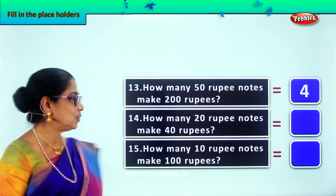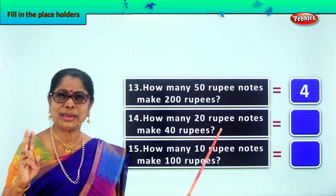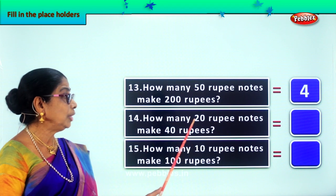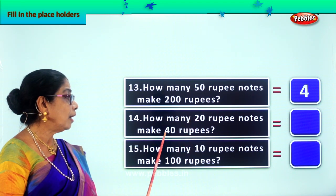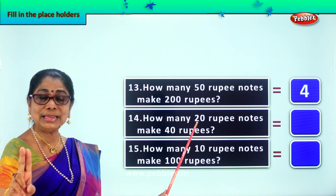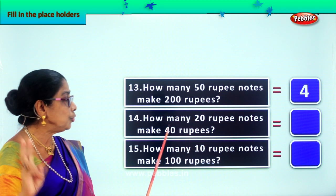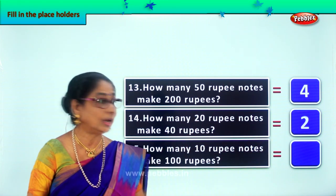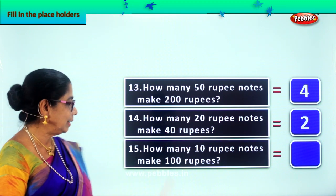Next one. How many 20-rupee notes? What's the color of 20-rupee notes? Yes — how many 20-rupee notes do we need to make 40 rupees? 20 plus 20 is 40. So we need 2 twenty-rupee notes. We write 2 here. We need 2 twenty-rupee notes to make 40 rupees.